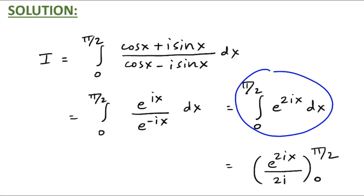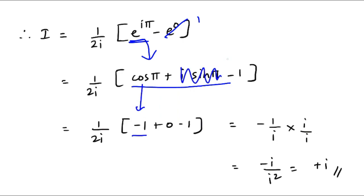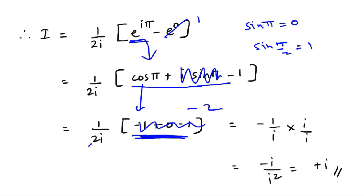So the integral becomes the integral of e raised to 2ix dx, since we are dealing with variable x. The answer is e raised to 2ix upon 2i. Applying limits from 0 to π/2: you get (1 upon 2i)(e raised to iπ minus e raised to 0). E raised to 0 is 1. For e raised to iπ, expand using cos π plus i sine π: cos π is minus 1 and i sine π is 0, since sine π is 0.